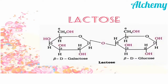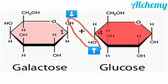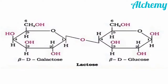Now we will discuss the structure and formation of lactose. Lactose is formed by the combination of galactose and glucose. A bond is made between the first carbon of galactose and the fourth carbon of glucose. H from the first carbon of galactose combines with OH of the fourth carbon of glucose, resulting in the formation of a water molecule which gets eliminated, resulting in the formation of lactose.